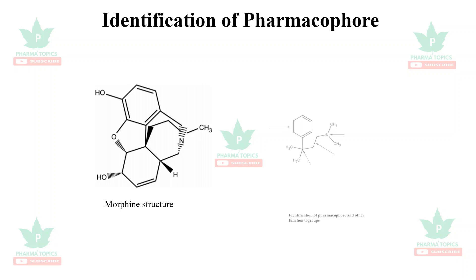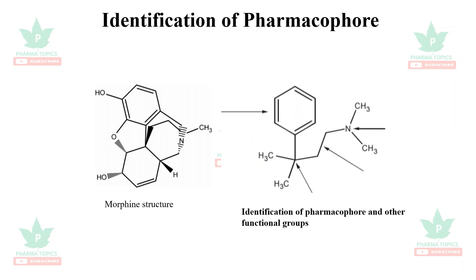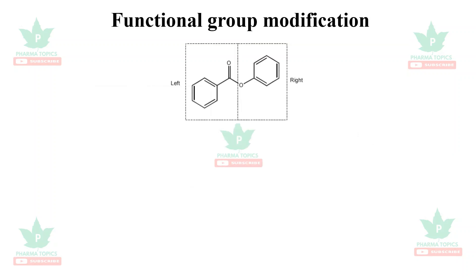An important consideration in lead optimization is identification of the pharmacophore. Taking the morphine structure as an example, you analyze which functional groups play a role in pharmacokinetics and pharmacodynamics, and which ring must not be disturbed to retain activity — that is called a pharmacophoric feature. Identification of the pharmacophore and other functional groups is very important in lead optimization.